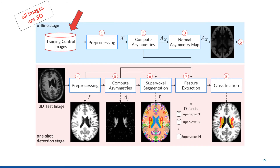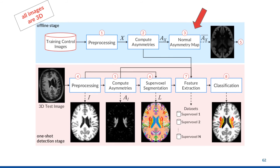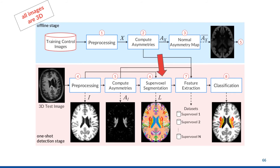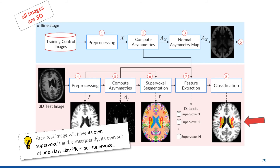Here is the proposed pipeline for SAAD. Given a training set with only healthy images, we first apply the preprocessing operators, then compute the asymmetries for each training image by computing the absolute difference between the left and right hemispheres. We also compute a normal asymmetry map by averaging all training asymmetries; this map is used to attenuate false positives during testing. Given a novel test image, we perform the preprocessing step followed by asymmetry computation, then compute pairs of symmetric supervoxels — each pair has one supervoxel in the left hemisphere and the corresponding one in the right. For each pair, we train a one-class classifier using the training asymmetries inside the pair, and these classifiers detect abnormal asymmetries, outputting a 3D mask. This process is dynamic: each test image has its own supervoxels and its own set of one-class classifiers per supervoxel.